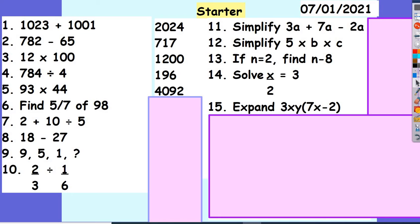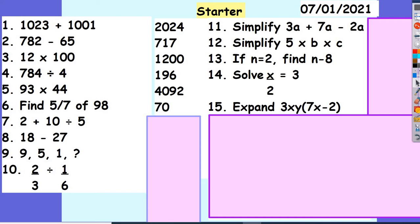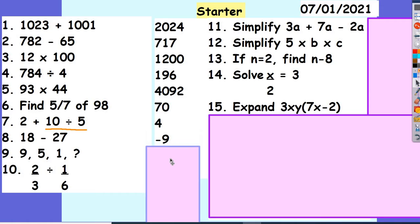To find 5 sevenths of 98, I need to divide it by 7 and then multiply it by 5, which gives me 70. For 2 plus 10 divided by 5, I need to use BIDMAS — division first, so 10 divided by 5 gives me 2, and 2 plus 2 gives me 4. 18 subtract 27 — notice 18 is the smaller number, so the answer is negative 9. For the sequence 9, 5, 1 — going down in 4s — the next number would be negative 3.